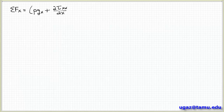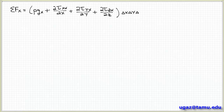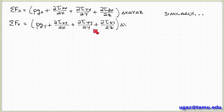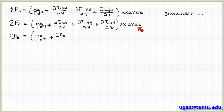Applying exactly the same analysis for forces acting in the y and z directions, we get that the y component of the sum of the forces is rho g_y plus the partial of tau_xy with respect to x, plus the partial of tau_yy with respect to y, plus the partial of tau_zy with respect to z, times the volume delta_x delta_y delta_z.